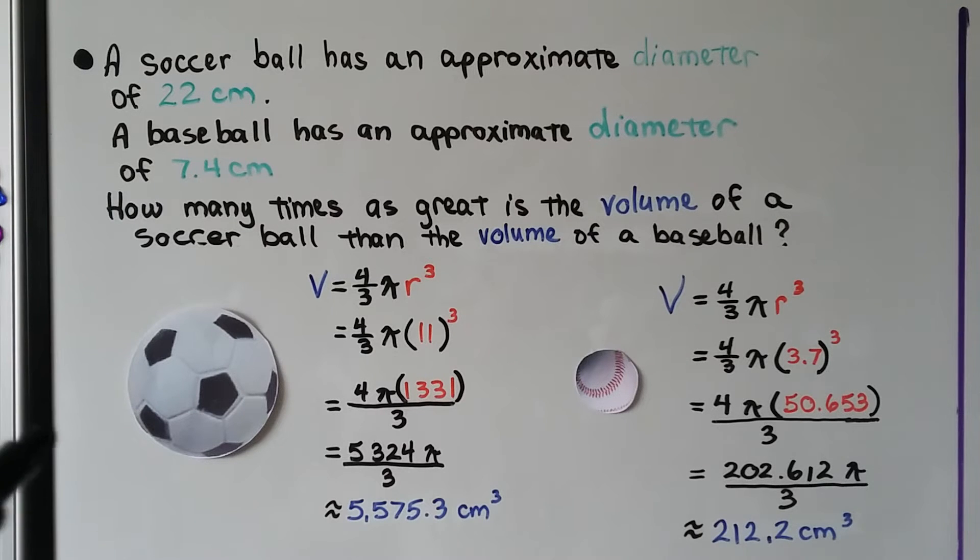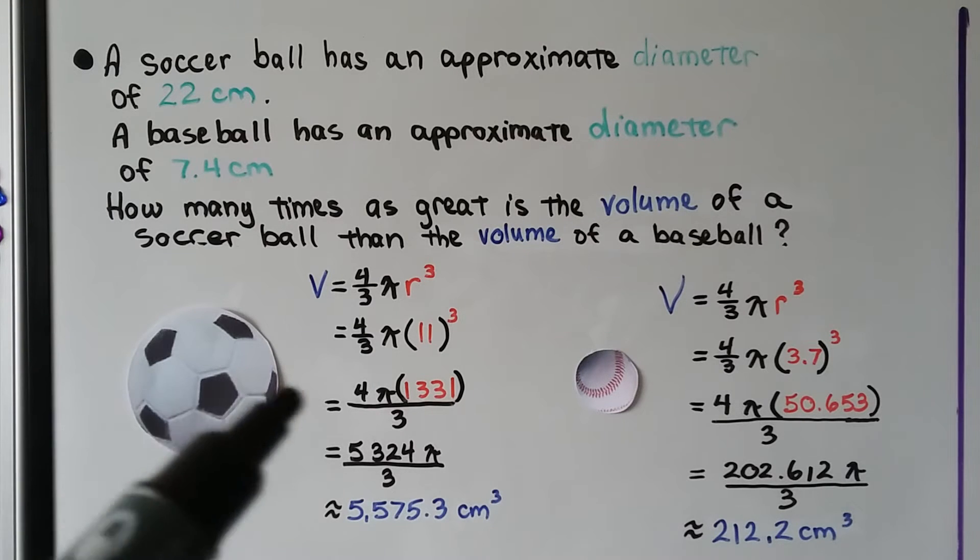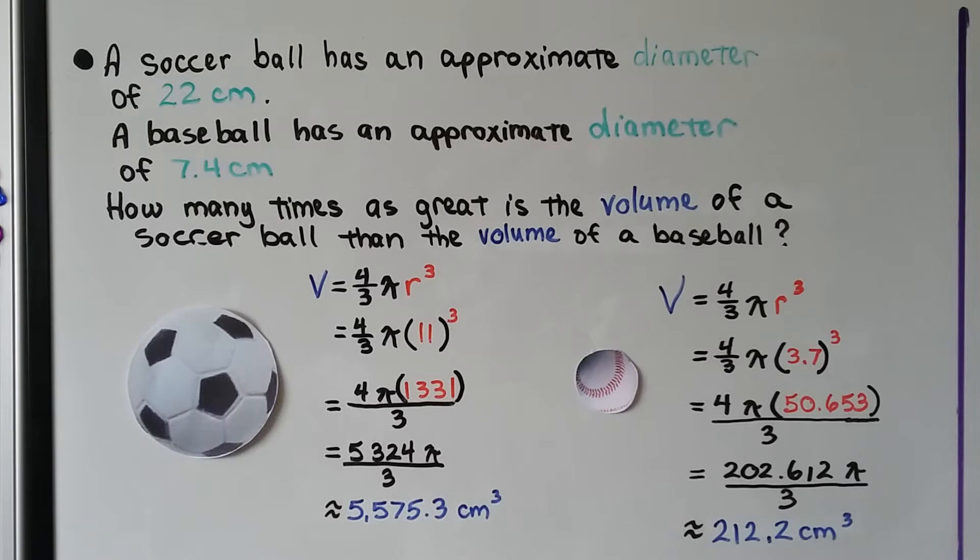A soccer ball has an approximate diameter of 22 centimeters. A baseball has an approximate diameter of 7.4 centimeters. So how many times as great is the volume of a soccer ball than the volume of a baseball?